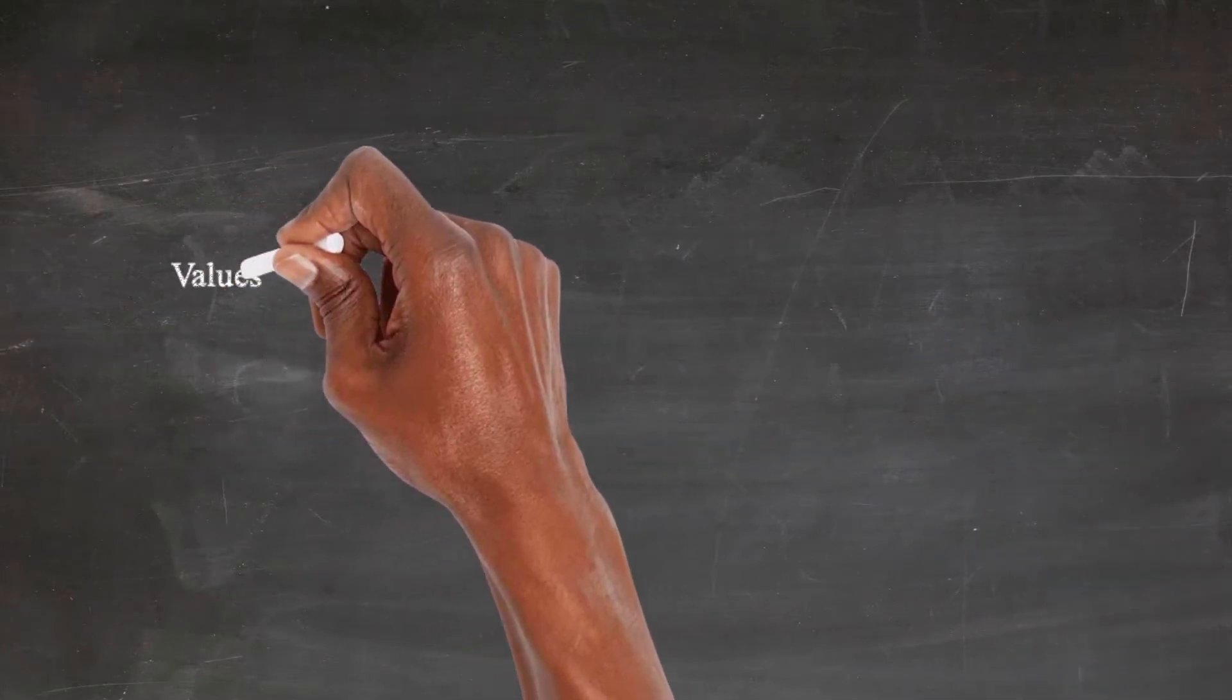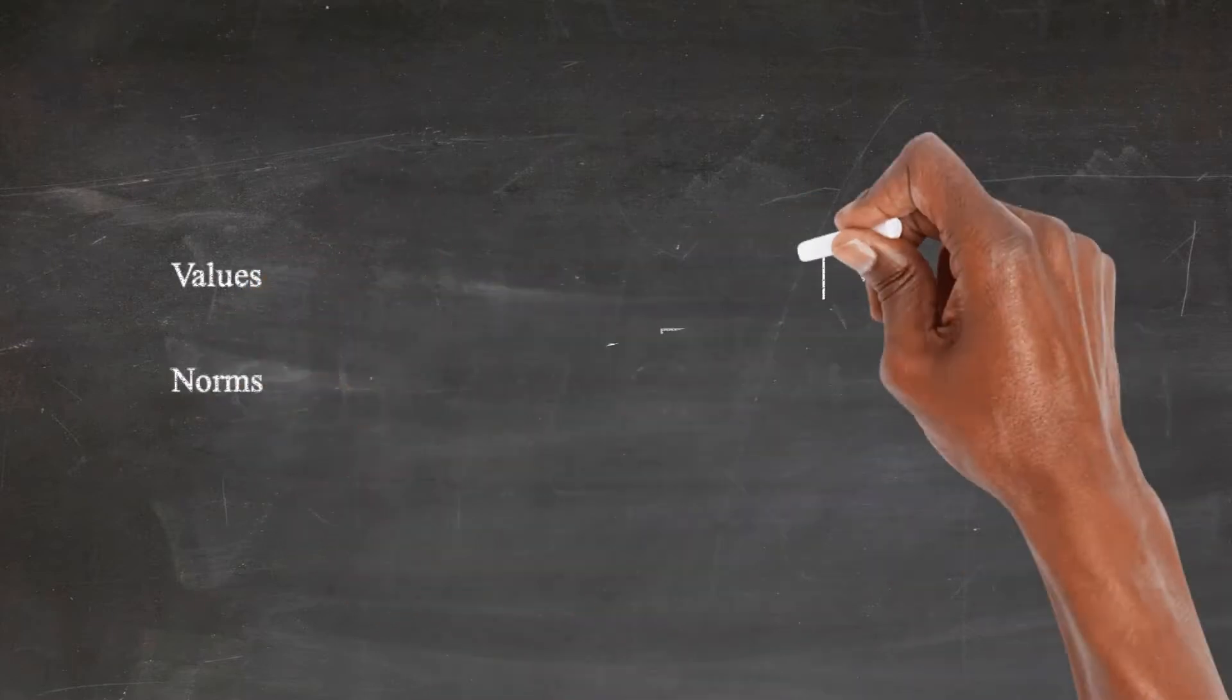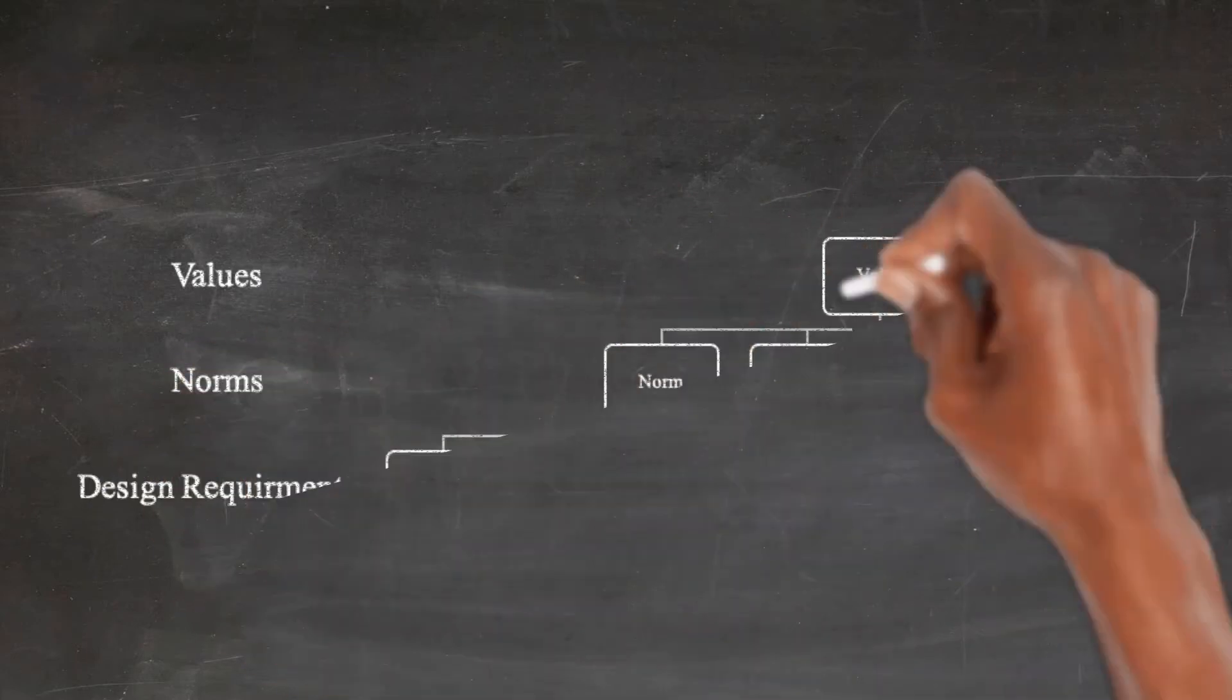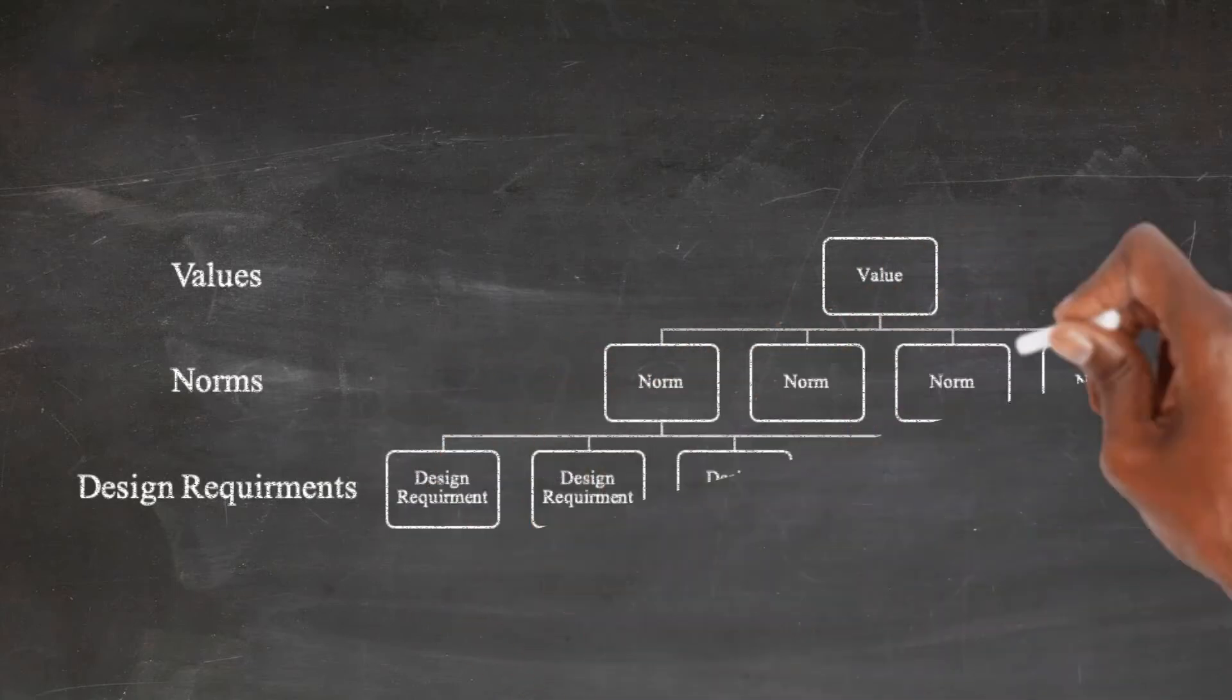With regards to the first proposal, we argue that AI for Social Good principles should be integrated as design norms. We propose to map the AI for Social Good principles onto the norms category used to translate values into technical design requirements, and vice versa.